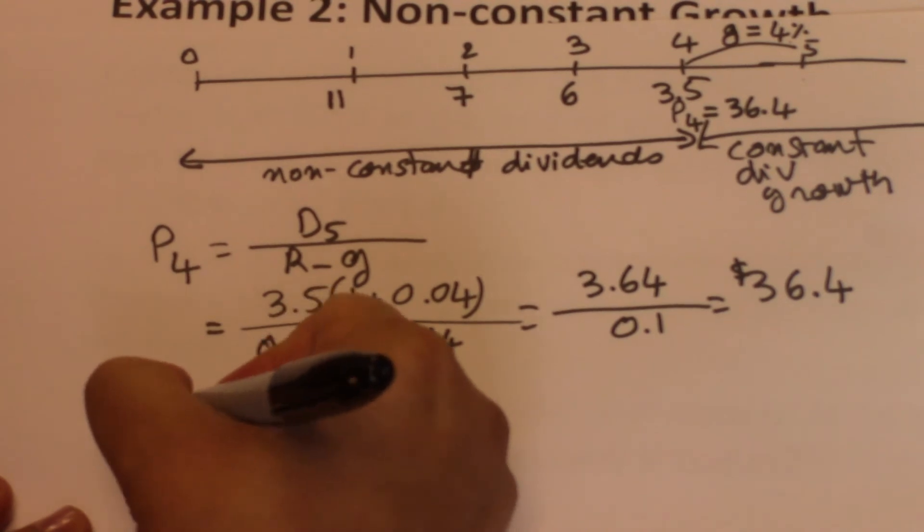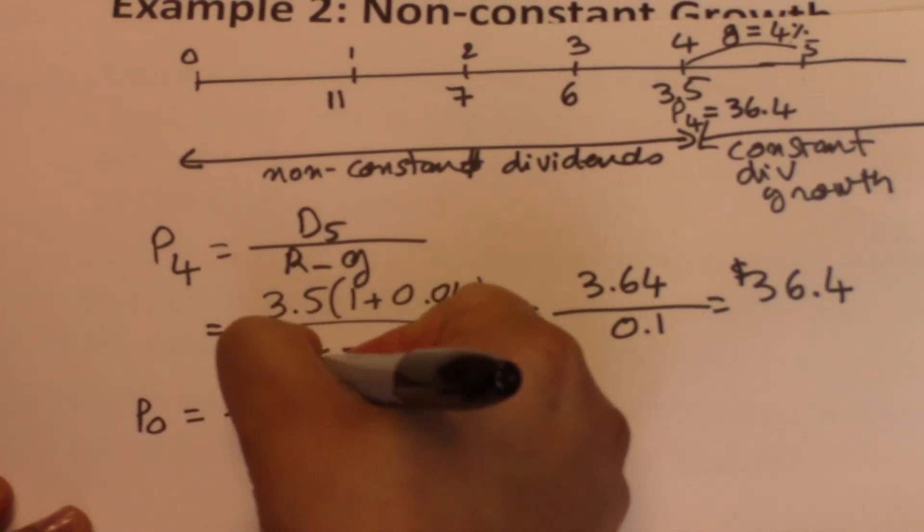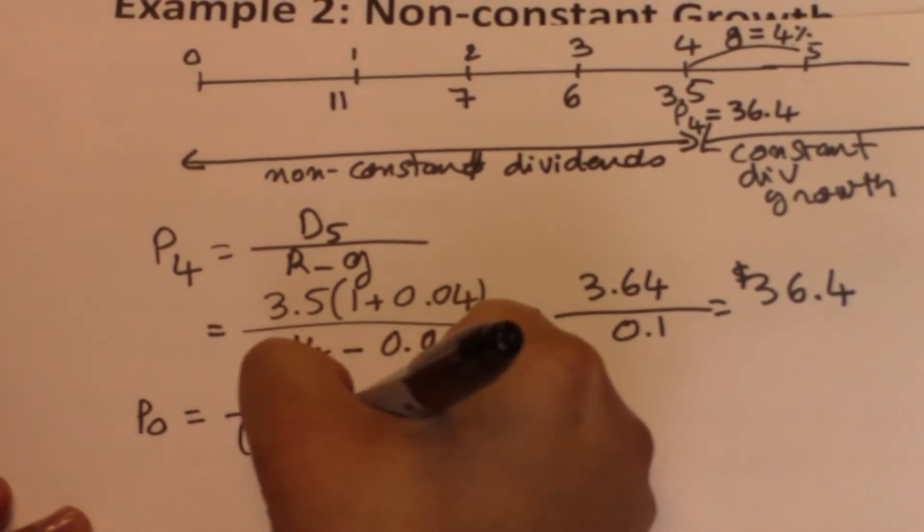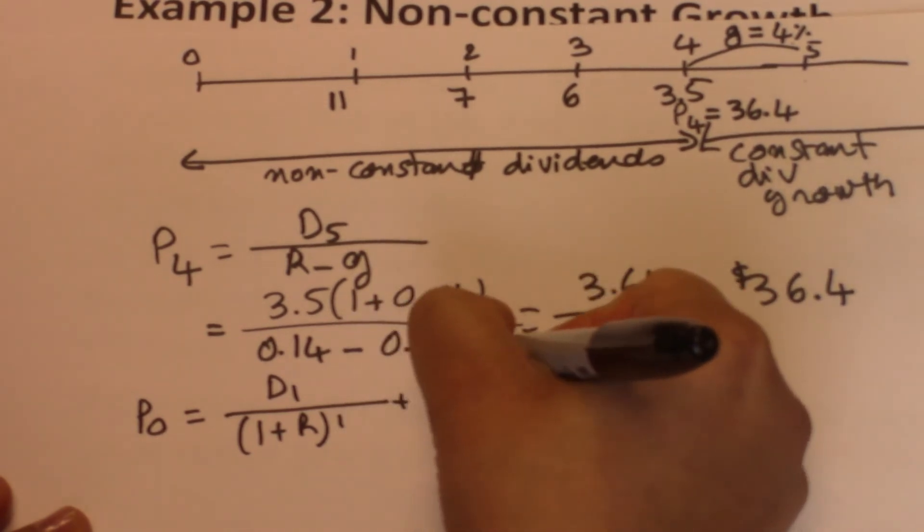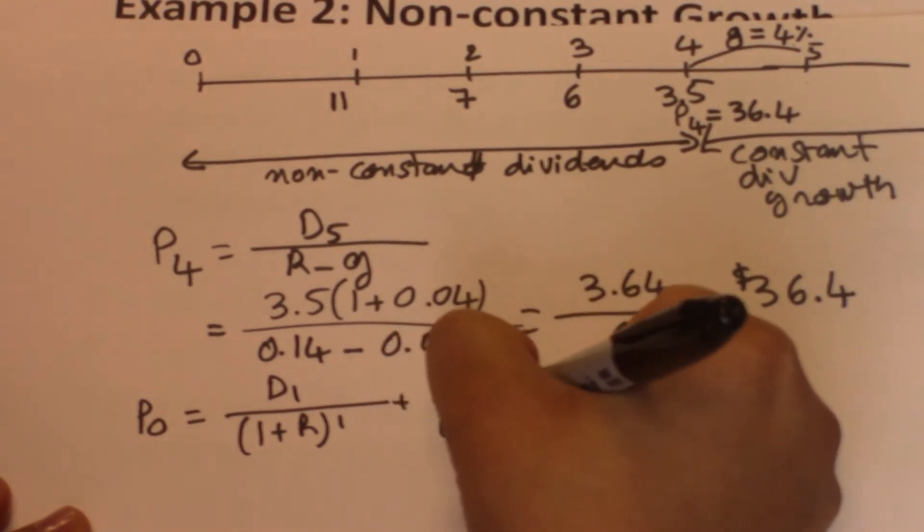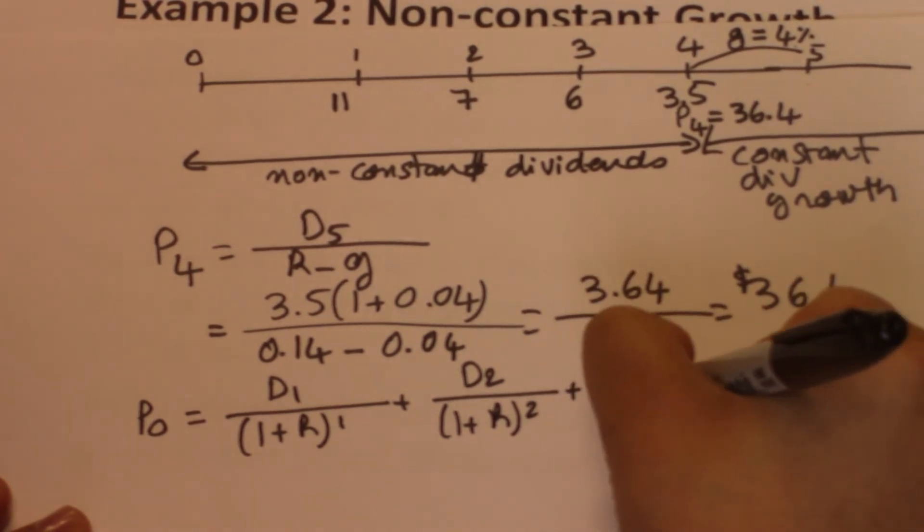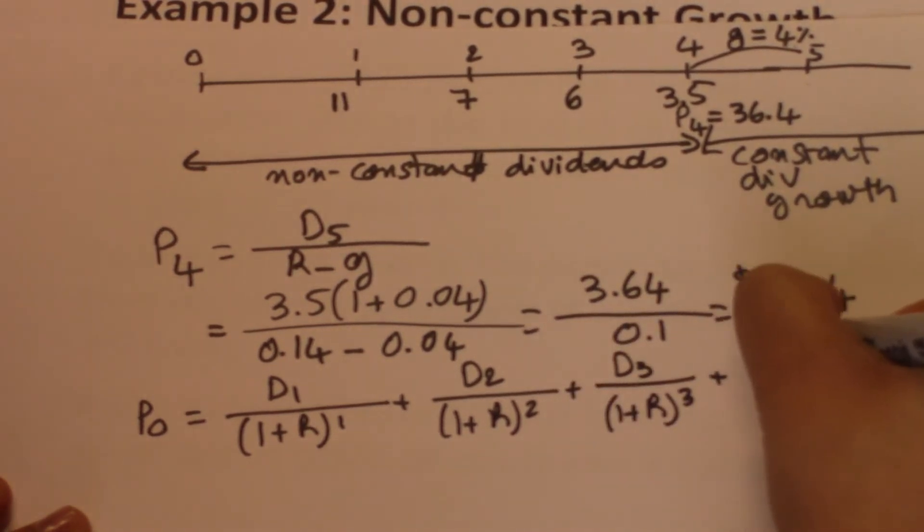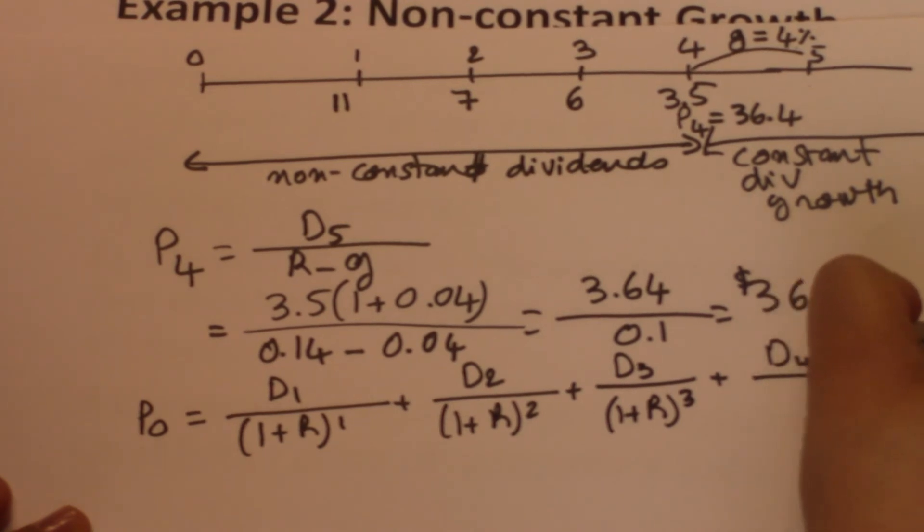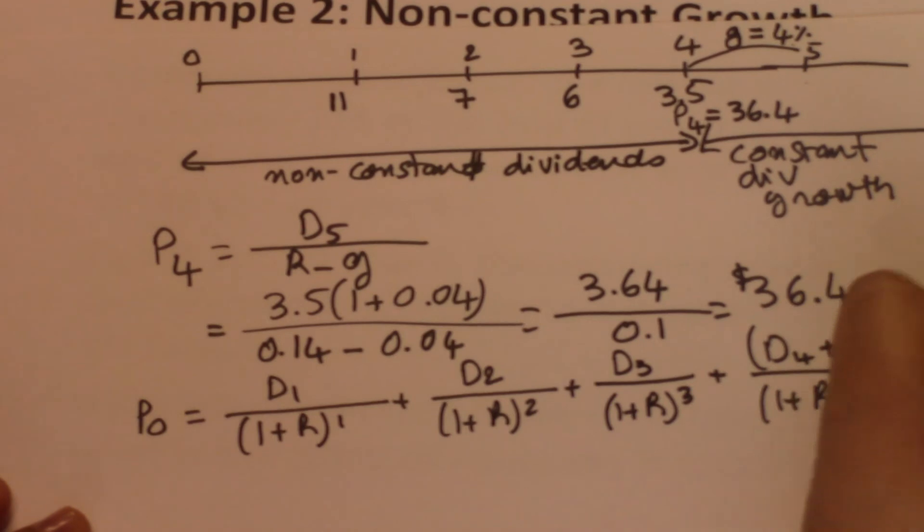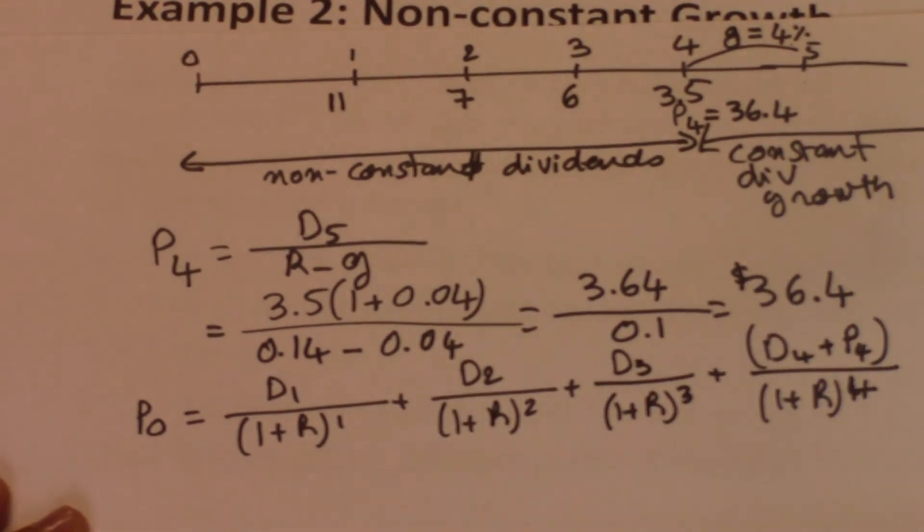P0 here would be equal to D1 divided by 1 plus R to the power 1, plus D2 divided by 1 plus R to the power 2, plus D3 divided by 1 plus R to the power 3, plus D4 plus P4 divided by 1 plus R to the power 4.